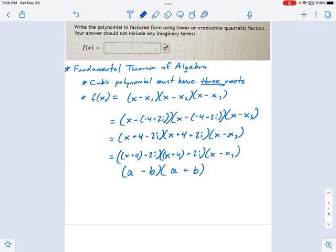That's the difference of squares, which means this thing is going to simplify as follows. It's going to be x plus 4 squared minus 2i squared, and then we have x minus x3. That starts to simplify really fast.